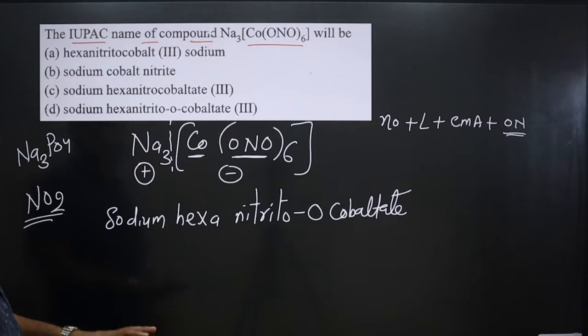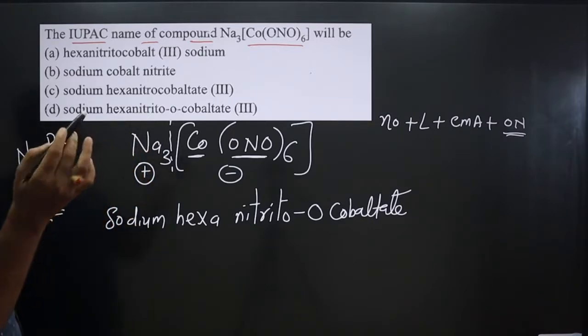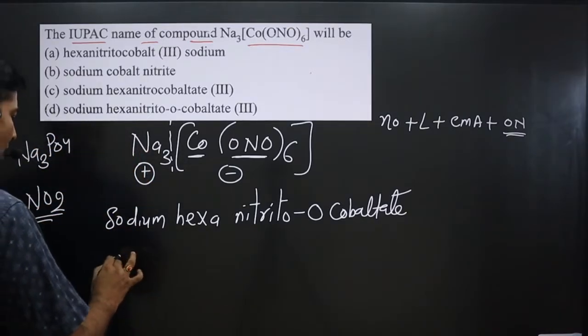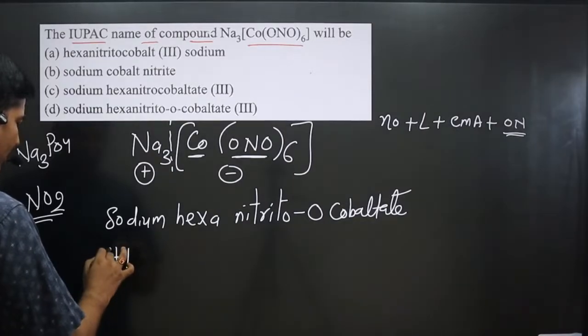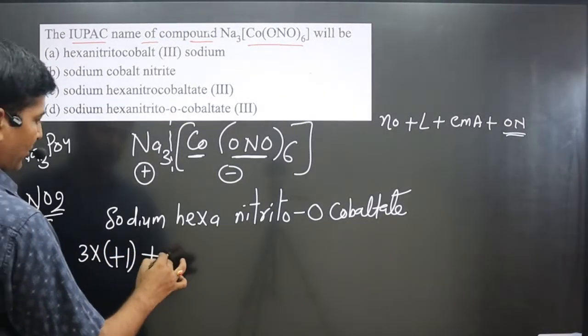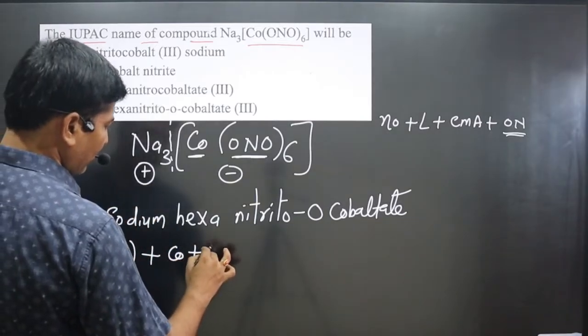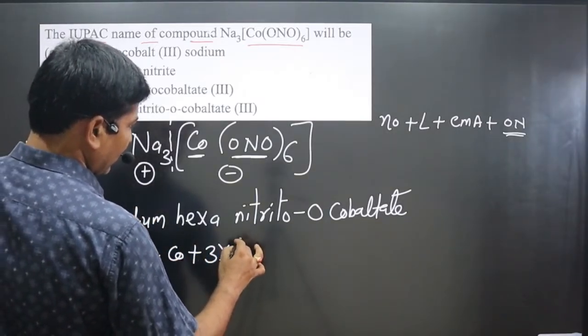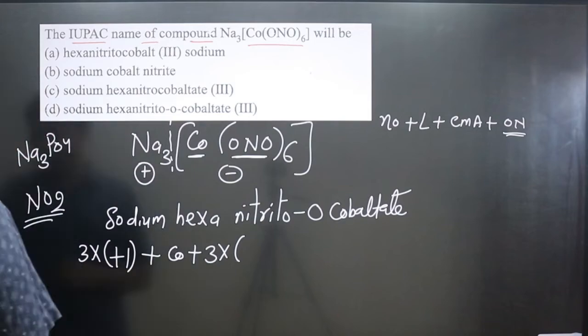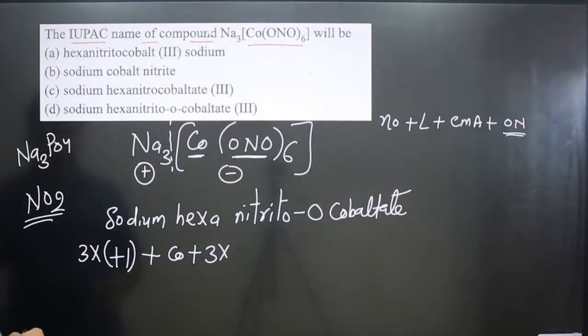Now we calculate oxidation numbers. Sodium always shows +1 oxidation number. How many sodiums are there? Three. So 3 × (+1) for cobalt, which we have to calculate. This is a negative ligand, so we have 6 × (-1) for the six ONO ligands.